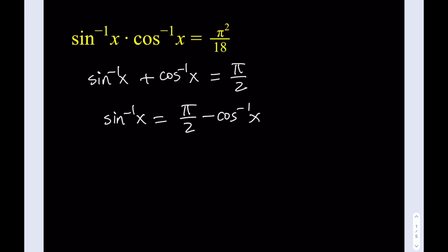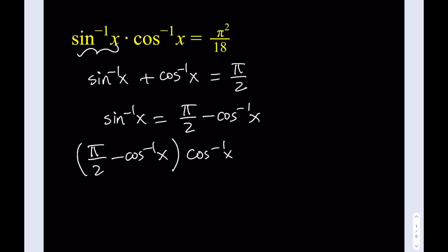Now in my equation I do have sine inverse of x, so let's go ahead and do that replacement. It's going to give me pi over 2 minus cosine inverse of x, multiplied by cosine inverse of x. Now we have a single variable, but that's not the end of the story because we still have to use substitution.